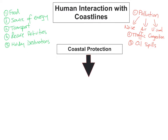Because we use our coastlines and the sea for so many things — such as food, source of energy, transport, leisure activities, and holiday destinations — seas and coastlines are really important to humans. Humans also interact with the coastline by trying to protect it.